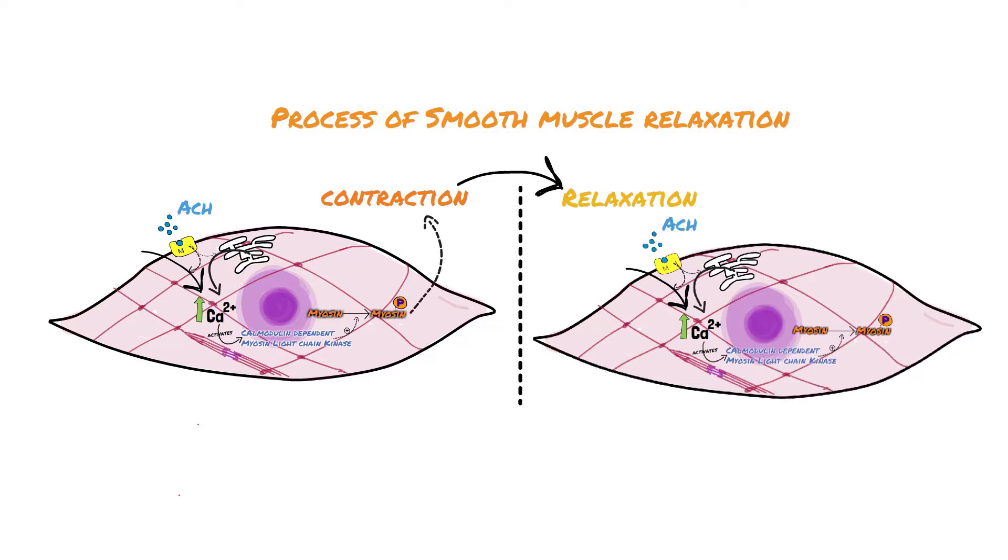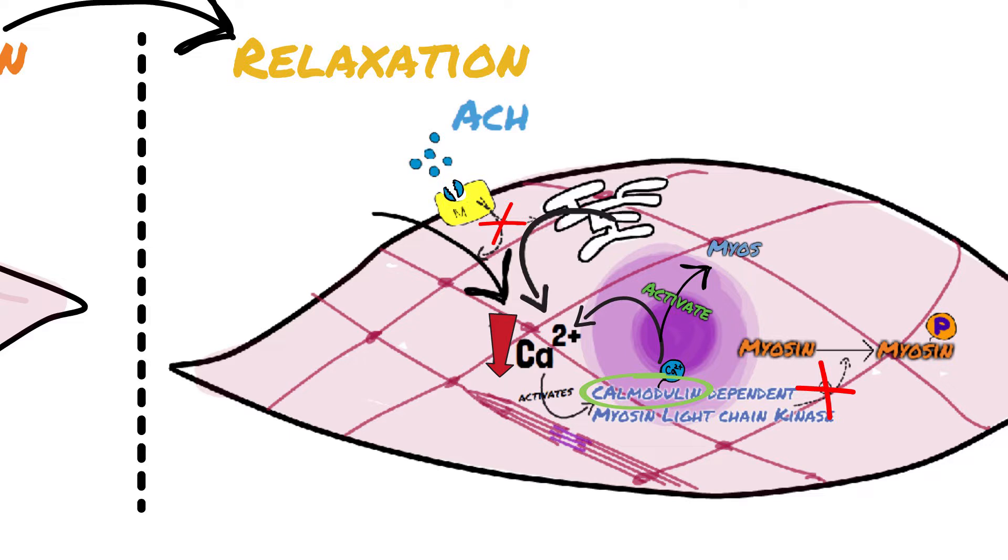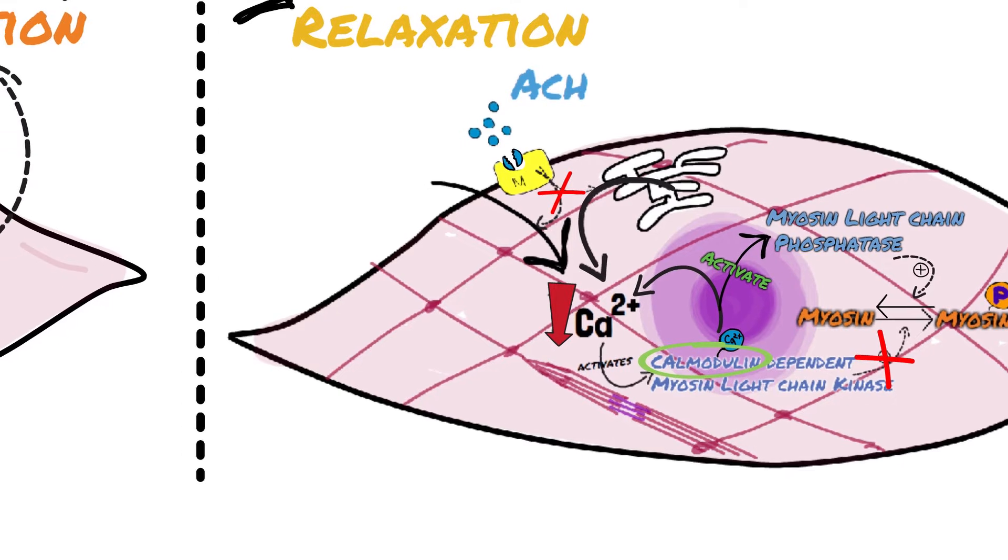Contraction of smooth muscles is followed by relaxation. Degradation of acetylcholine terminates acetylcholine-mediated signal transduction at the neuromuscular junction. Reduction of calcium concentration stops the myosin kinase activity due to release of Ca2+ from calmodulin. Then myosin light chain phosphatase becomes activated and dephosphorylates myosin.